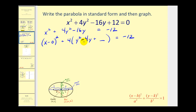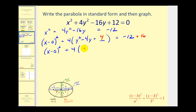To complete the square, we take half of negative 4 and square it: negative 2 squared gives positive 4. We have to be careful here — when we add a 4 inside the parentheses, we're actually adding 16 to the left side because of the factor of 4 out front. So we must add 16 to the right side to maintain equality. Rewriting, we have (x minus 0) squared plus 4 times (y minus 2) squared equals 4.